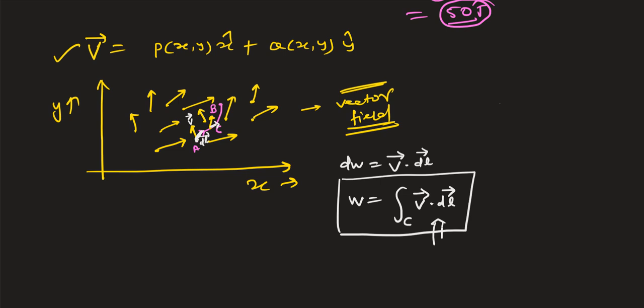This is the intuition of the line integral — integrating along a line, which is the path from point A to point B. At each point there is some work done by the vector field upon the particle. When you integrate all these infinitesimal works together, you find the line integral, which gives the total work done upon the particle along that path.